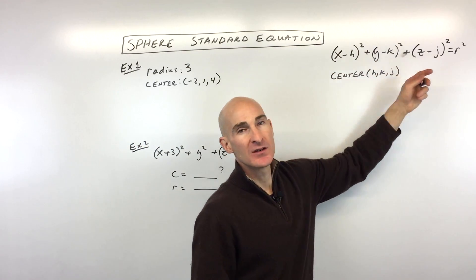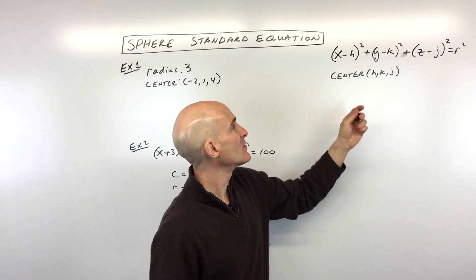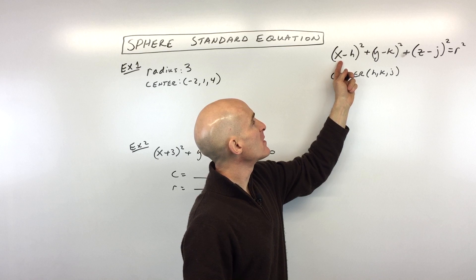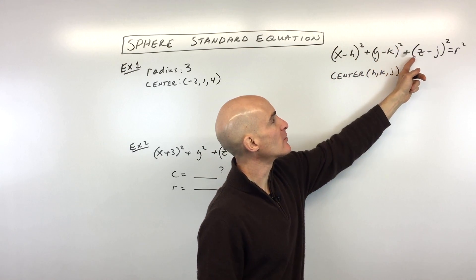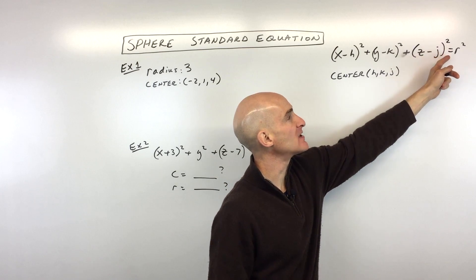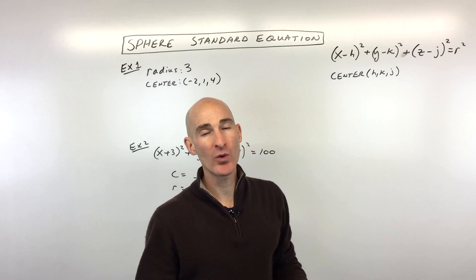The first thing you want to know is the basic form of the equation of a sphere, the standard form. And it's this form here. It's (x - h)² plus (y - k)² plus (z - j)² equals the radius of the sphere squared.